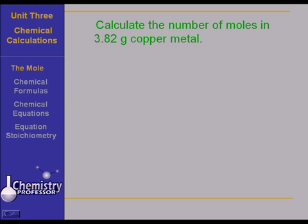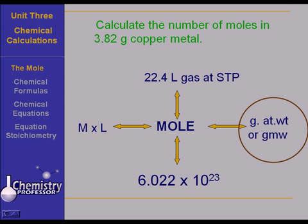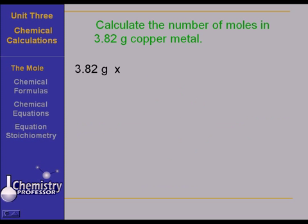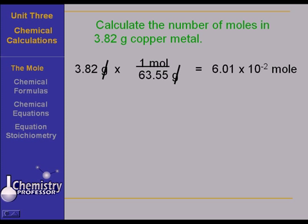Suppose you were asked to calculate the number of moles in 3.82 grams of copper metal. On the mole roadmap, you're starting at mass. You're starting with 3.82 grams of copper metal, and you've got to get that to moles. You take 3.82 grams times one mole over 63.55 grams. Your grams cancel, and that leaves you with moles of copper metal. That was kind of easy. Let's try another one.